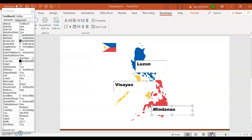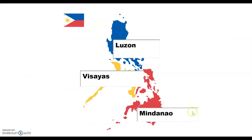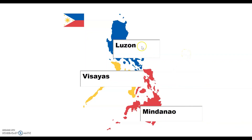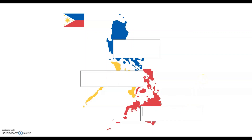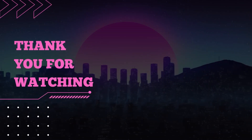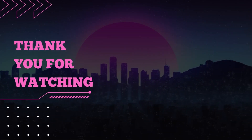When we go back to the Slideshow presentation, now we have the map of the Philippines with the labeled portions of the three main geological divisions. You can always edit the text — if you want to delete, you can delete. This is how we enable typing during a Slideshow presentation in PowerPoint. Just remember the use of the Developer tab if you want to try this. Thank you.